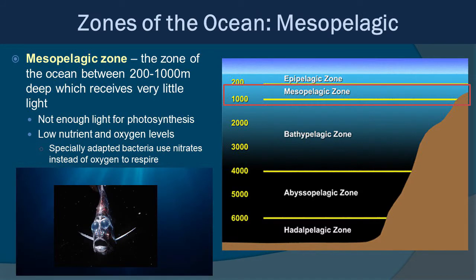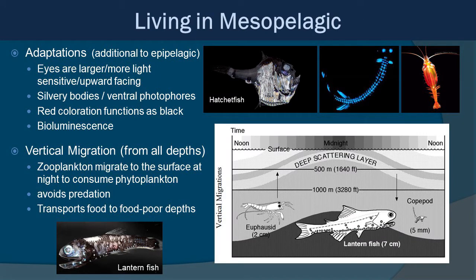Let's descend below the epipelagic into the mesopelagic zone. The mesopelagic is the area between about 200 to 1,000 meters deep and receives very little light — generally not enough for photosynthesis, but a little ambient downwelling light. This is a nutrient-poor area that also tends to have low oxygen levels. There are specially adapted bacteria that use nitrates instead of oxygen for respiration. Many epipelagic species descend into the mesopelagic, and some mesopelagic species ascend into the epipelagic — these are not zones with strict barriers.